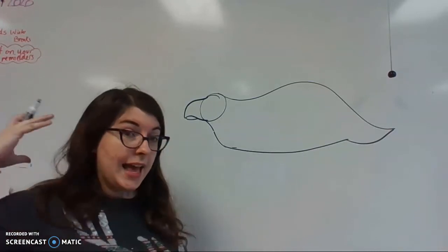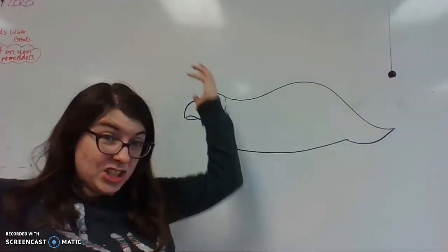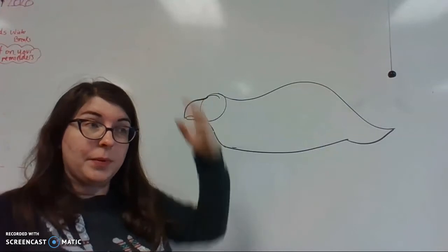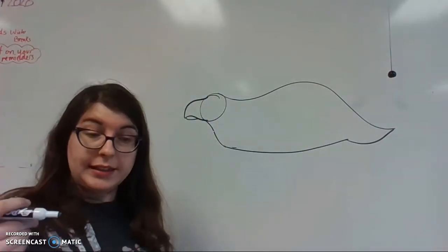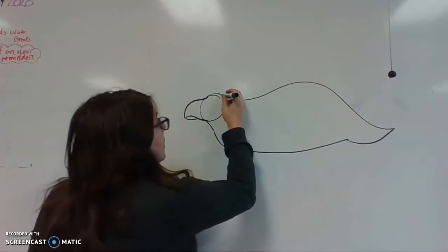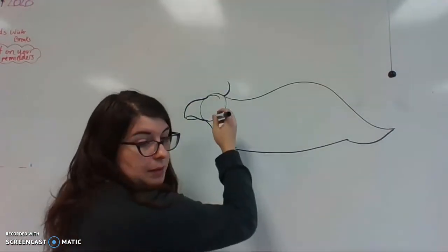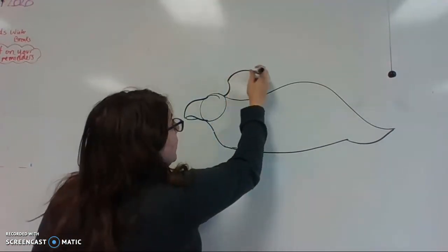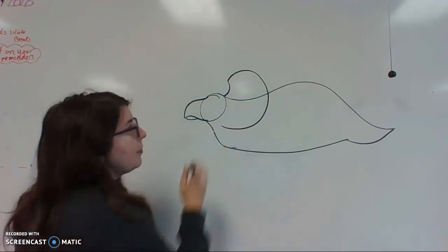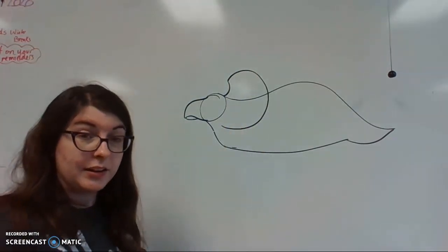Now the Triceratops' head is what it's most famous for. It has a big giant frill to help keep it cool in the sun. So we're going to make a curved line that goes up, and then a big letter C, a big backward C. Good, good.